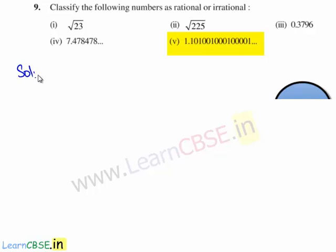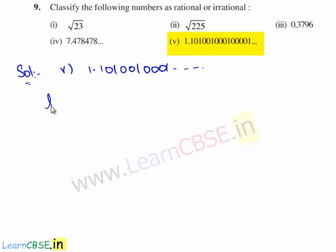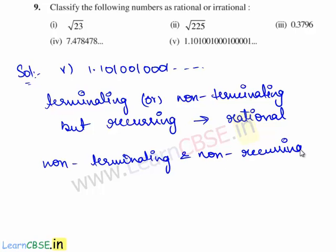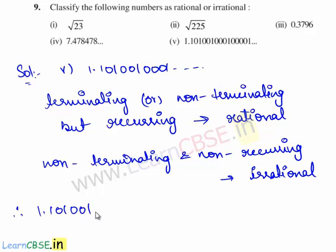Now let us move on to the fifth bit. We need to classify whether 1.101001001... is rational or irrational. A number whose decimal expansion is terminating or non-terminating but recurring is a rational number, whereas a number whose decimal expansion is non-terminating and non-recurring is an irrational number. In the given decimal expansion, the decimal is non-terminating and the digits are not repeating. Therefore, this is non-terminating and non-recurring. Therefore, 1.101001001... is an irrational number.